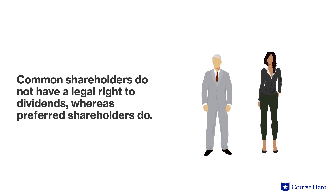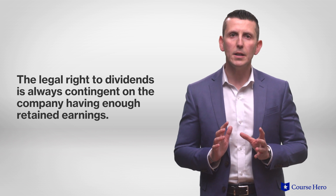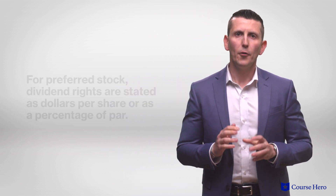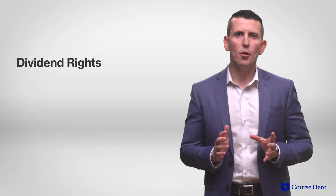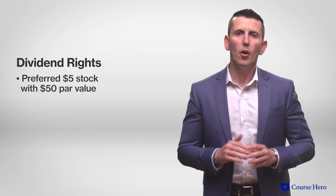Preferred stockholders have some preferential rights, one such right being the right to dividends. Common shareholders do not have a legal right to dividends, whereas preferred shareholders do. The legal right to dividends is always contingent on the company having enough retained earnings — a company cannot pay dividends if there is no net income or retained earnings, despite the fact that preferred shareholders may have a dividend preference. For preferred stock, dividend rights are stated as dollars per share or as a percentage of par — for example, preferred five-dollar stock $50 par, or preferred 7% stock $50 par — representing the dividend amount to which preferred stockholders have a priority.